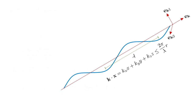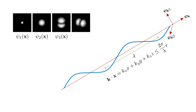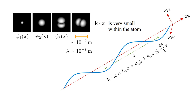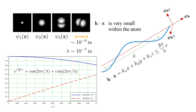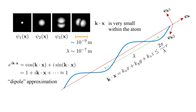k·x is zero at the origin and increases to 2π at a distance of lambda, one wavelength, along the propagation direction e_k. The size of the atom is determined by the spatial extent of the electron orbital. For hydrogen wavefunctions, this is typically less than about 10^{-9} meters, while the wavelengths of hydrogen transitions are larger than 10^{-7} meters — much larger than the size of the atom. Therefore k·x is very small everywhere within the atom, and e^{i k·x} varies only slightly from 1. So, to a reasonable approximation, e^{i k·x} equals 1. This is called the dipole approximation. With this approximation, the absorption and emission coefficients are identical.